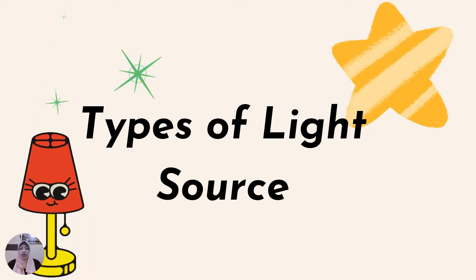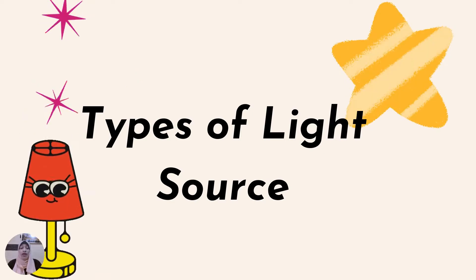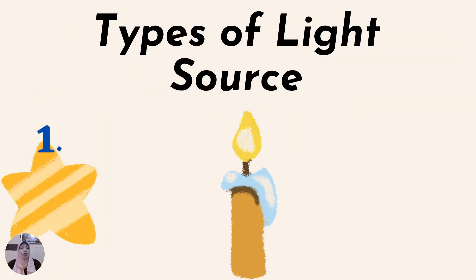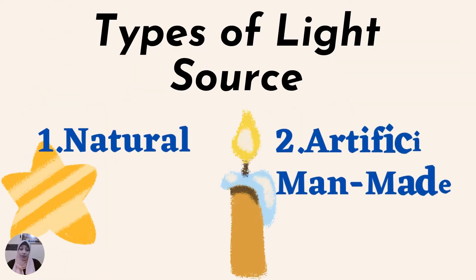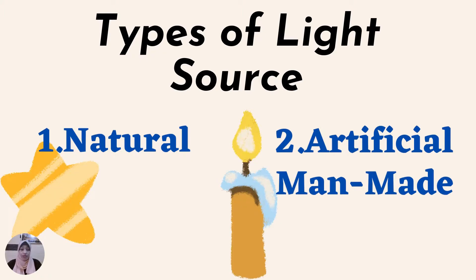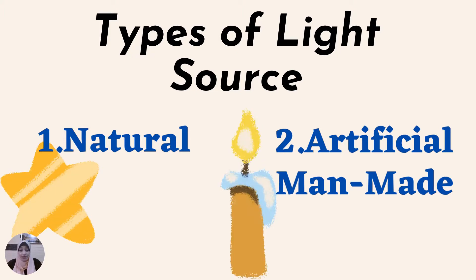We have two types of light sources. One: natural. Two: artificial, or we can call it man-made source of light.